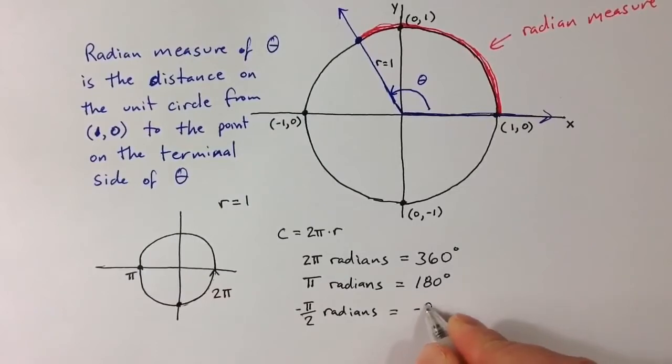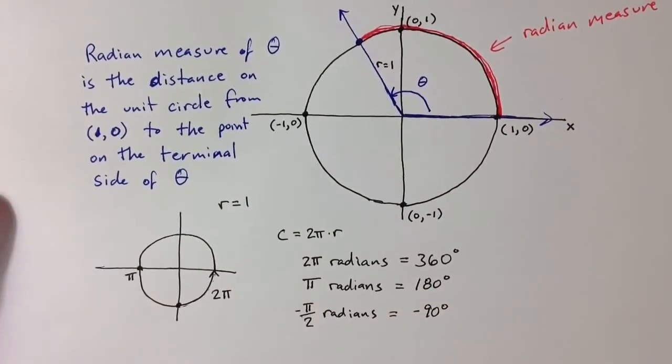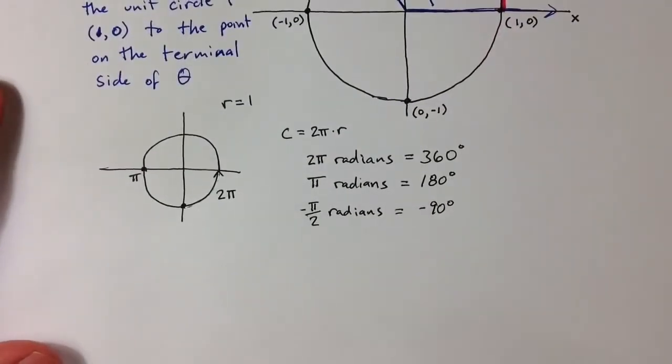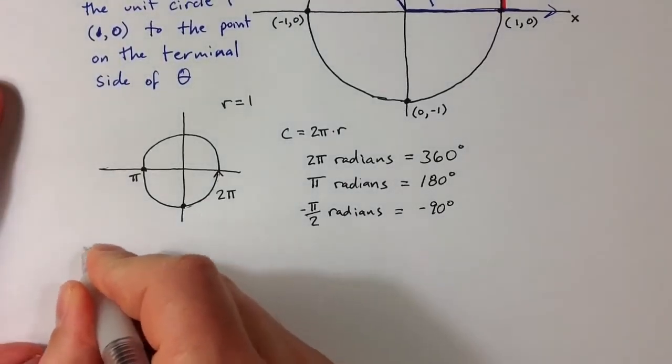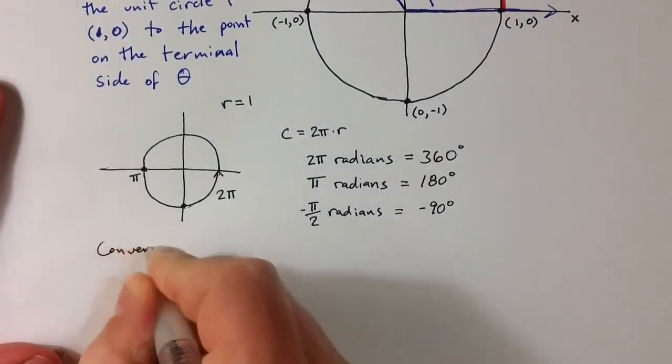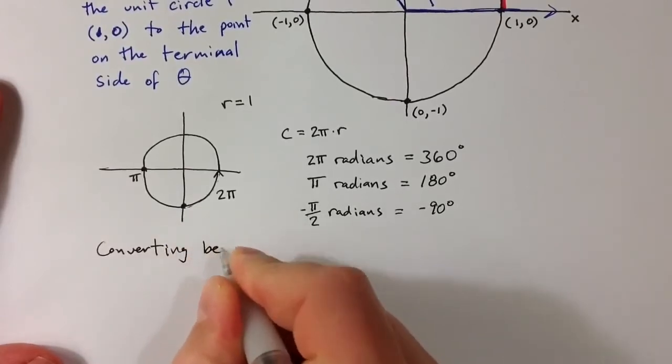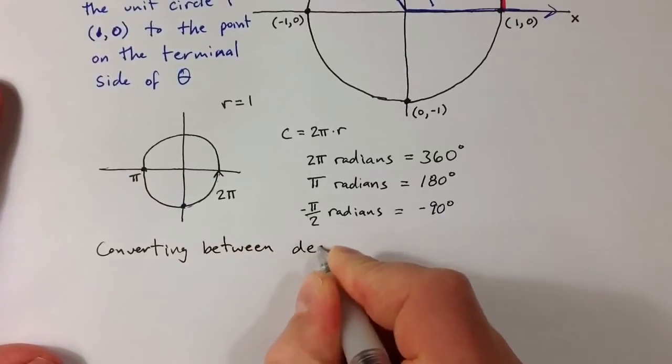That would take us to negative 90 degrees. So developing intuition about the connection and relationship between radian measure and degree measure is an important step in coming to terms with what radians represent. And so let's talk about converting between those two.